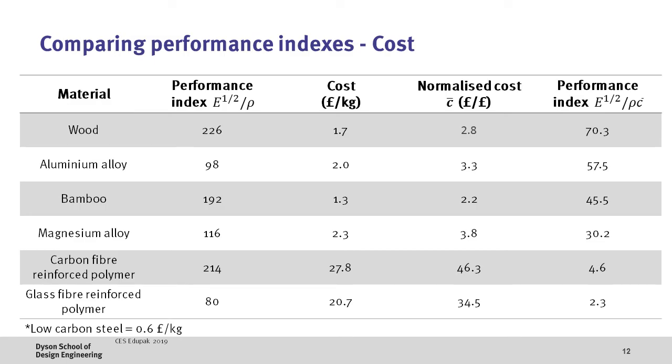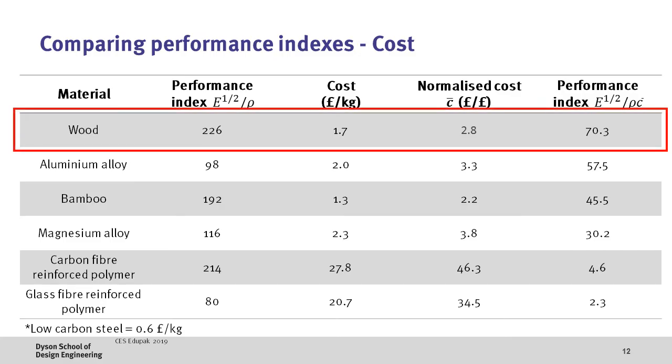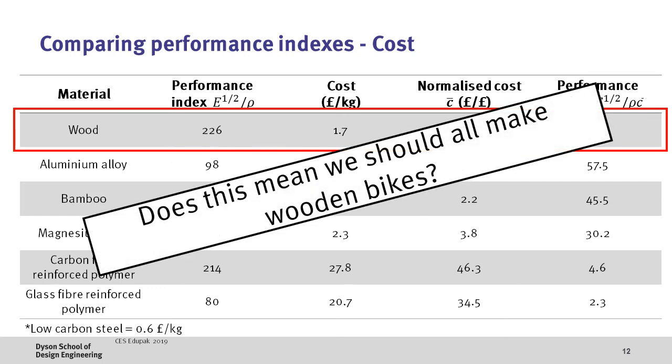Now if we then take the performance index of our six materials and incorporate the normalized cost into the performance index we can re-rank them. In this case we put the normalized cost as the denominator as a lower cost would increase the performance index. Also we've arbitrarily put a unity weighting on the cost performance index but if this was more or less important this would obviously change the eventual answer. Now after factoring in costs we can see that wood, aluminum alloys and bamboo are the top materials with carbon fiber second to last now. Therefore does this mean that we should all make wooden bikes?